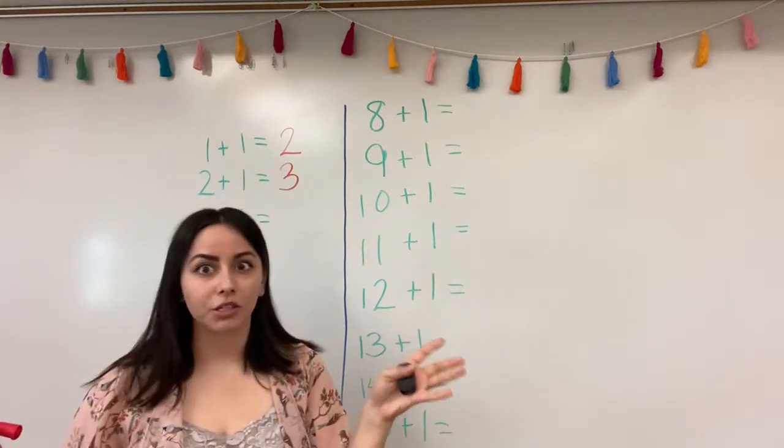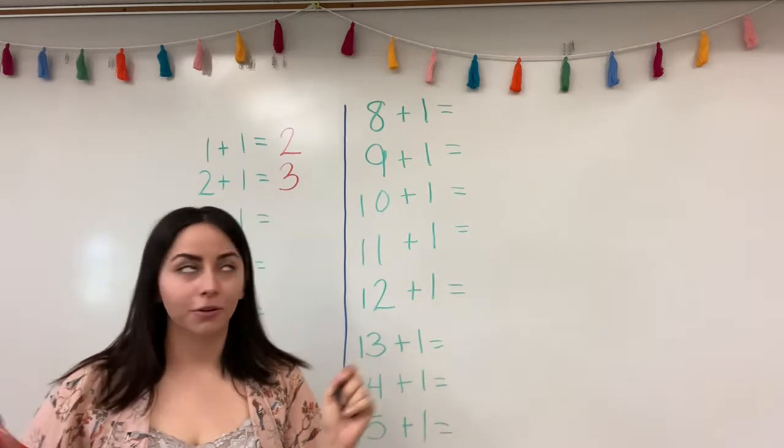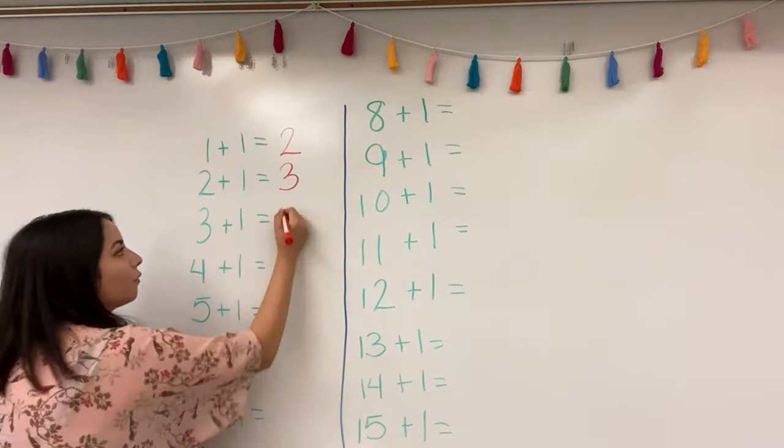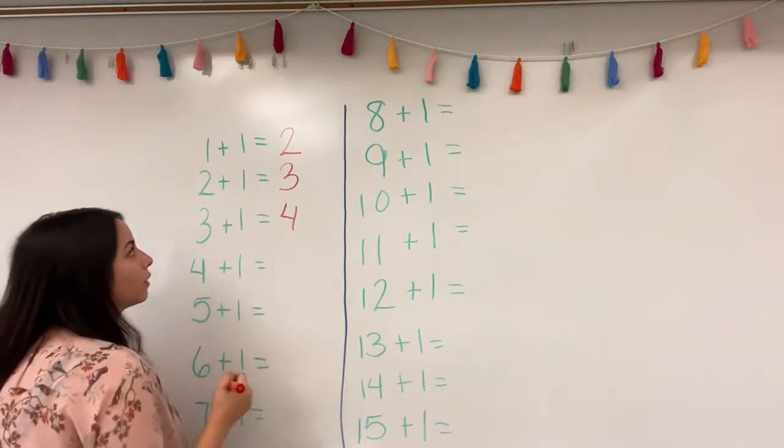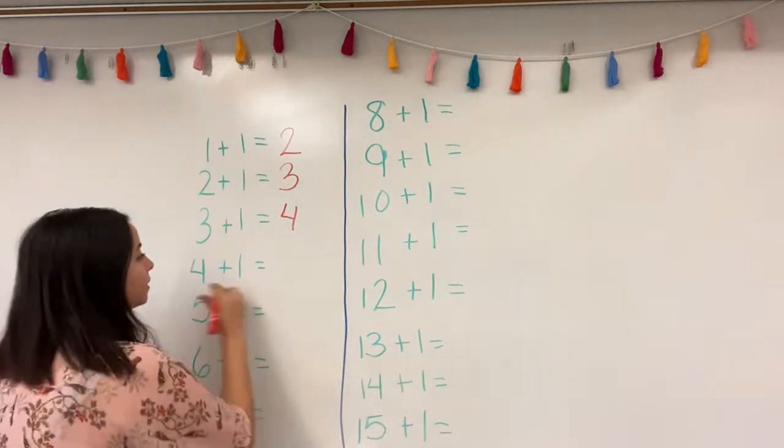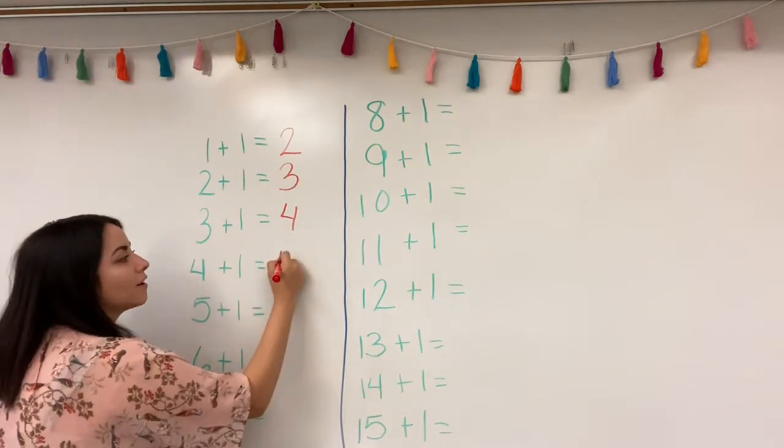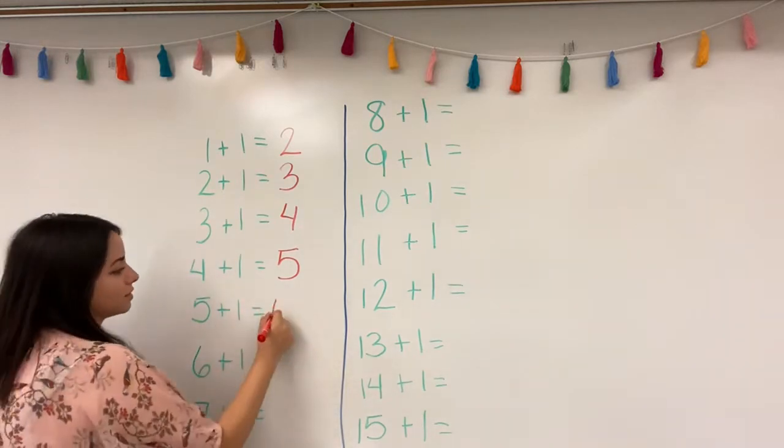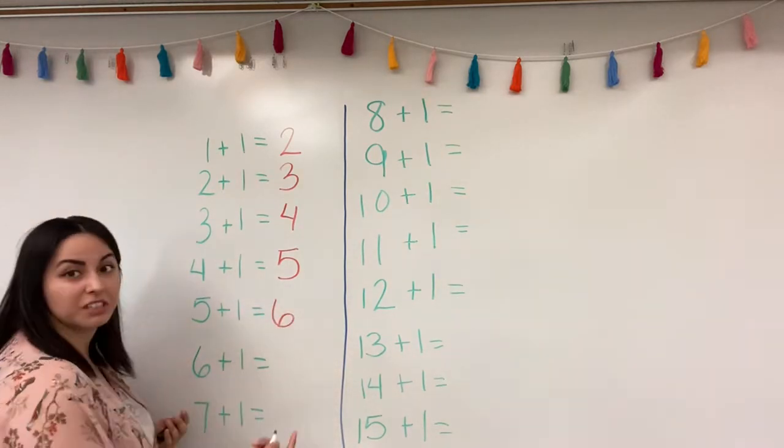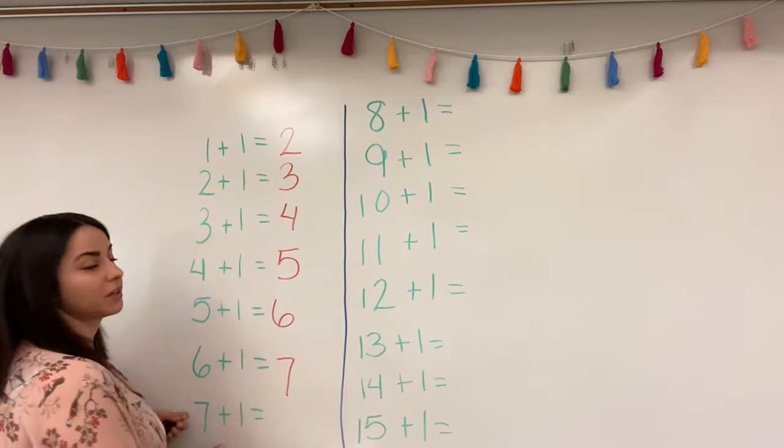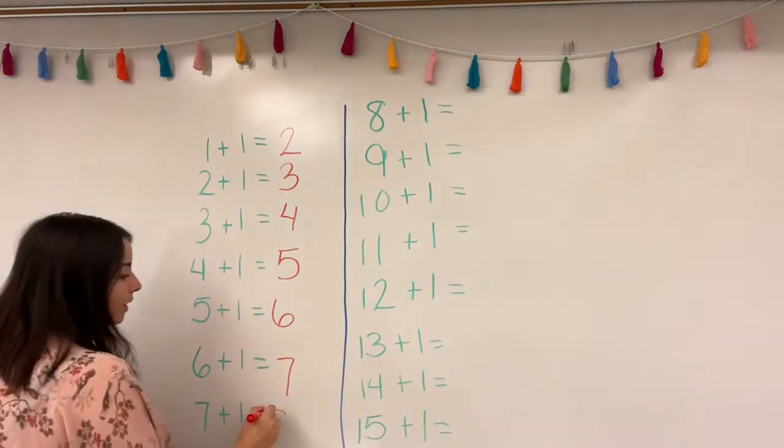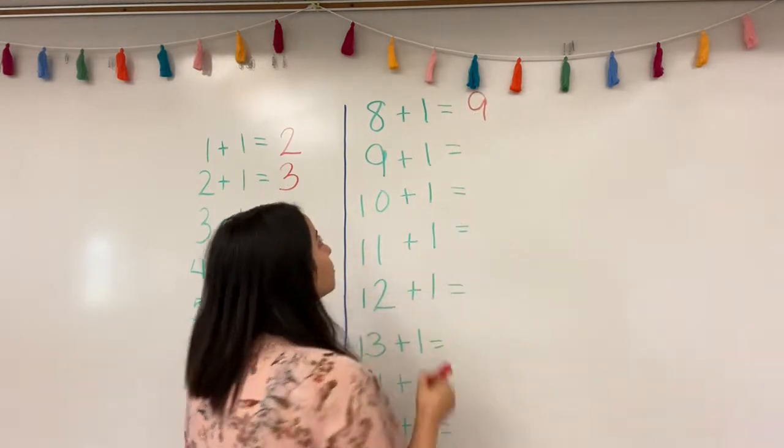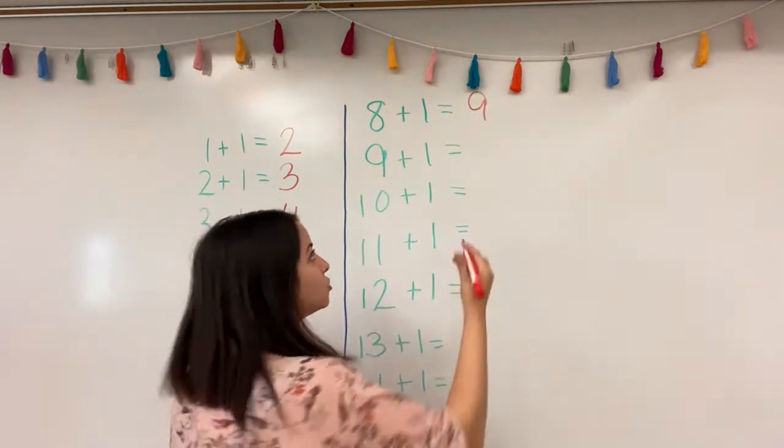This is going to be like the simplest little math review from last year ever. So three adding one more is going to be four. Now what's four plus one? Four plus one is five. What about five plus one? Six. What about six plus one? Seven. What about seven plus one? Eight. What about eight plus one? Nine. What about nine plus one? Ten. Super simple, right?